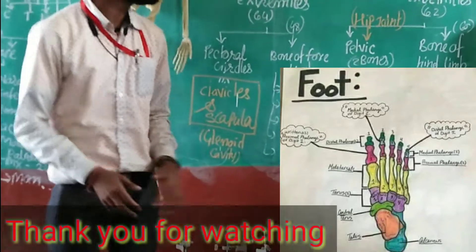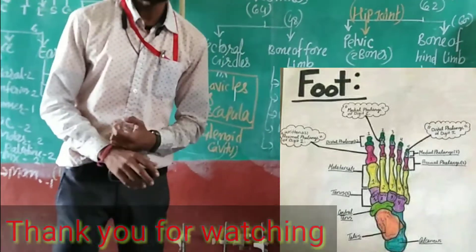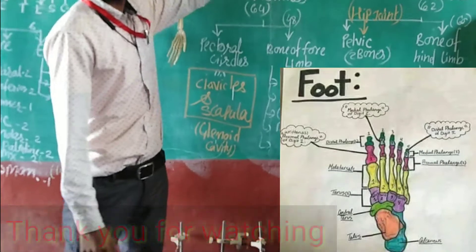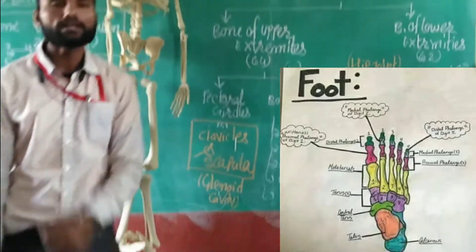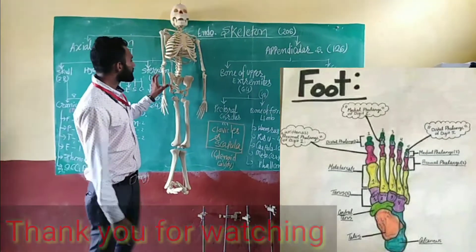The total lower extremities count is 62 bones, giving an overall total of 126 bones in the appendicular skeleton.